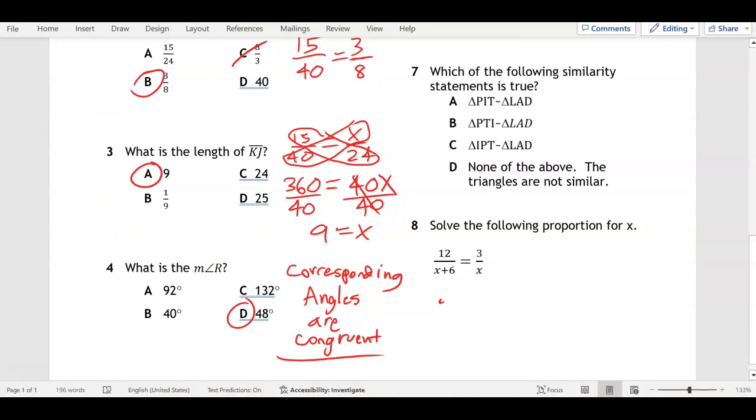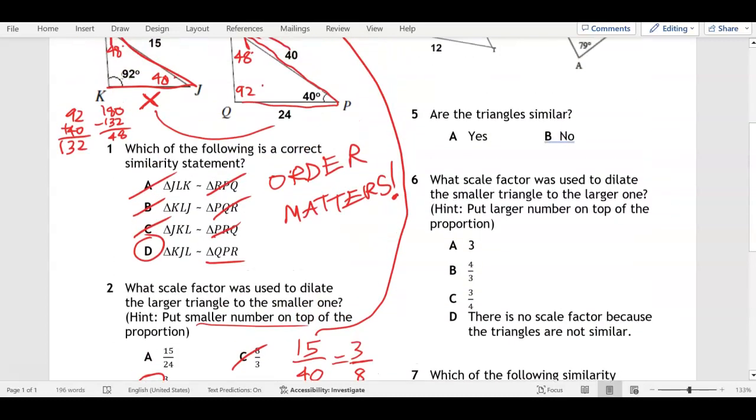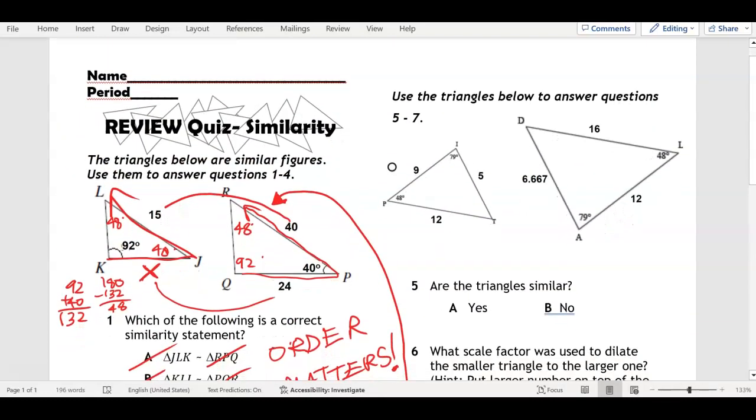Number five: are the triangles similar? Now what we need to do is we need to see if all three sides are proportional.